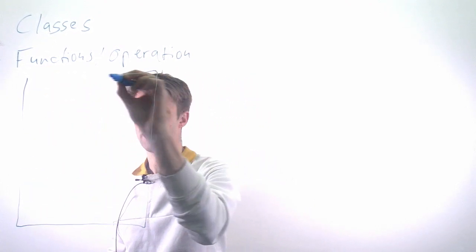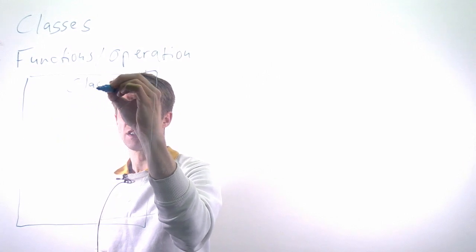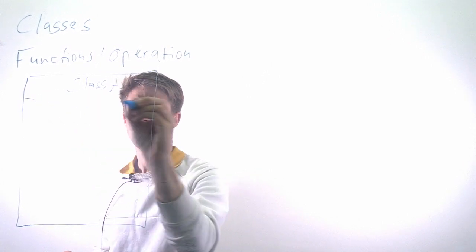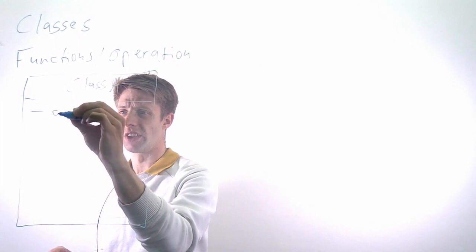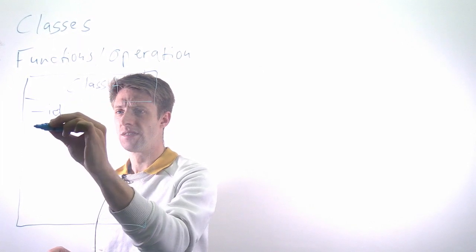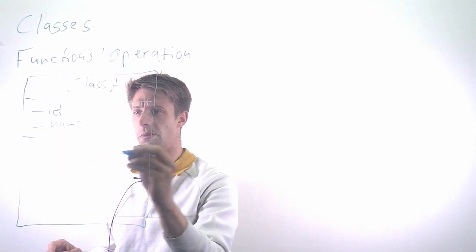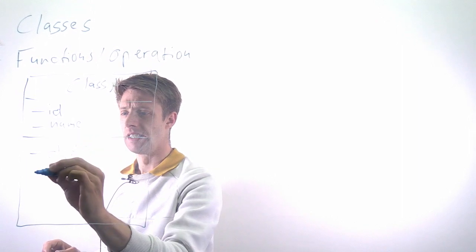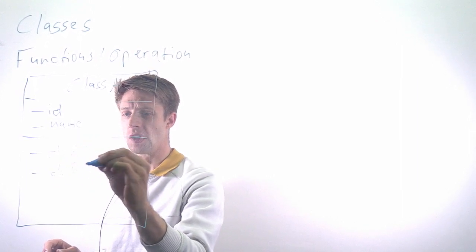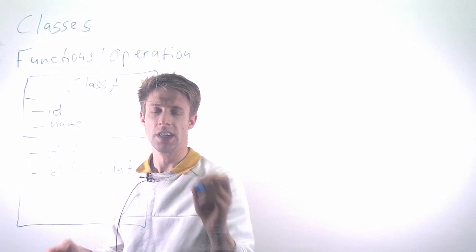So I'll use UML here. You have a class name, you have a certain number of attributes. For example, you might have something called an ID, maybe a name, different kinds of attributes. Then you have operations like do A, do B, and they might have parameters, return values, and so on.